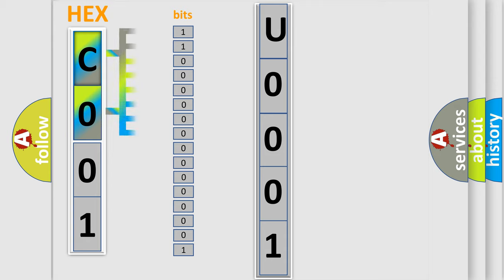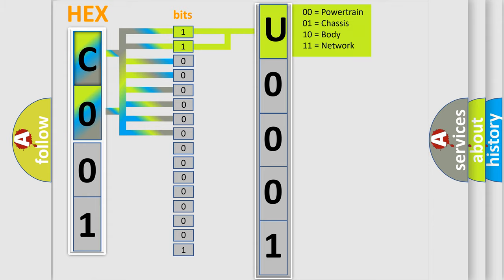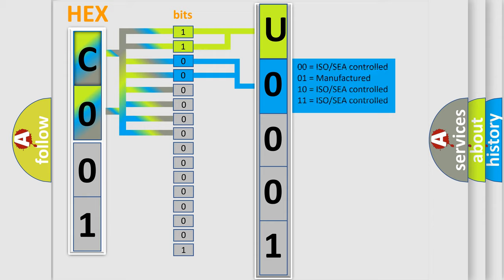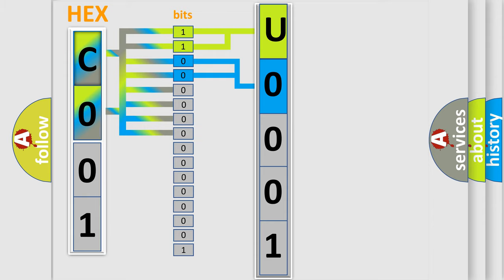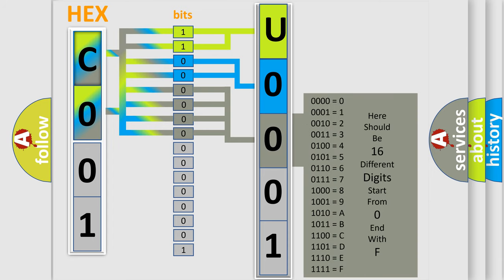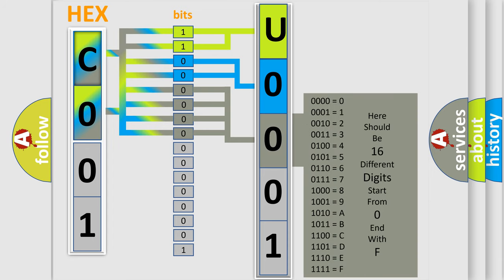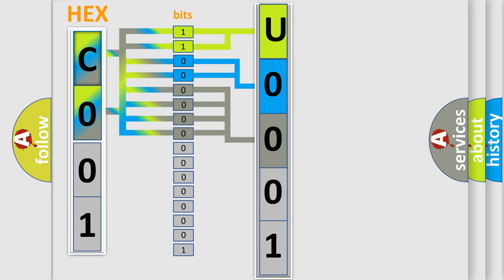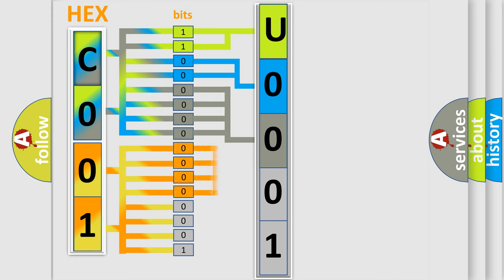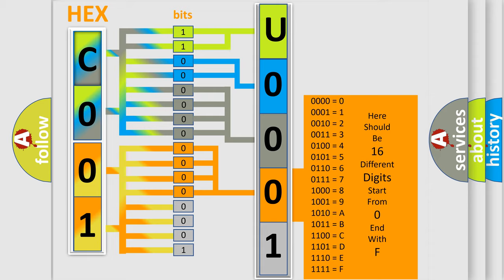The bit has two logical states: zero (low level) and one (high level). By combining the first two bits, the basic character of the error code is expressed. The next two bits determine the second character. The last bits of the first byte define the third character of the code. The second byte is composed of eight bits — the first four bits determine the fourth character, and the last four bits define the fifth character.